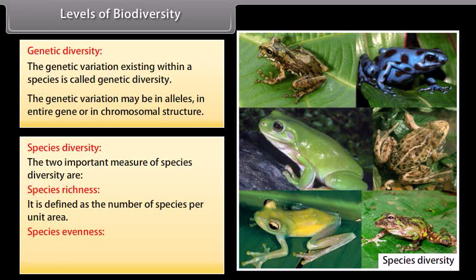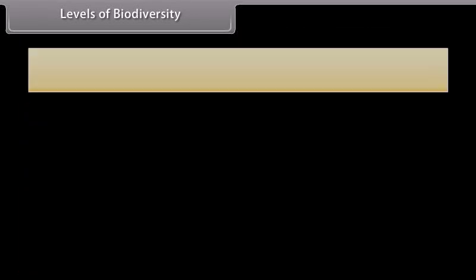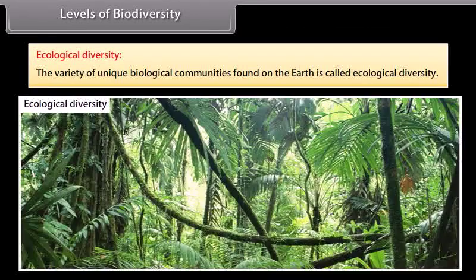Species evenness refers to the relative abundance with which each species is represented in an area. Ecological diversity: the variety of unique biological communities found on the earth is called ecological diversity.